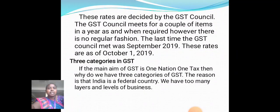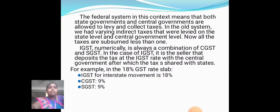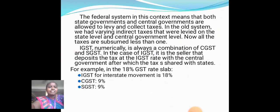Three categories in GST: if the main aim of GST is one nation, one tax, then why do we have three categories of GST? The reason is that India is a federal country. We have many layers of business. The federal system in this context means that both state governments and central governments are allowed to levy and collect taxes. In the old system, we had varying indirect taxes levied at both the state and central government level.